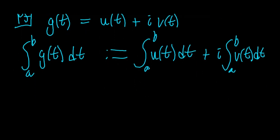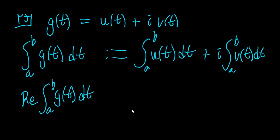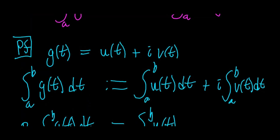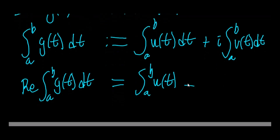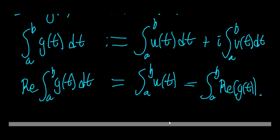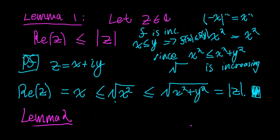The real part of the integral from a to b of g(t) dt is exactly the integral from a to b of u(t) dt. And u(t) is the real part of g(t), so this equals the integral from a to b of the real part of g(t) dt. So we're done with Lemma 2. Now we're finally ready to prove our main result.